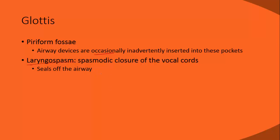Laryngospasm is a spasmodic closure of the vocal cords — from open to closed — making it impossible to pass a tube without significant damage. Causes include trauma to the larynx from sloppy technique during intubation attempts. Laryngospasm also occurs in drowning patients while awake: water and the gag reflex trigger laryngospasm, keeping the lungs dry, and it is not easily reversed with standard tools.